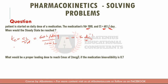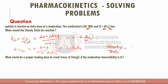Now I have the elimination rate constant, so I can obtain the t-half. t-half equals 0.693 divided by ke, giving a t-half of 1.15 days. Now I'm looking for the steady state, which equals five half-lives. So five multiplied by 1.15 gives 5.75 days to reach steady state, because it takes five half-lives to reach steady state.